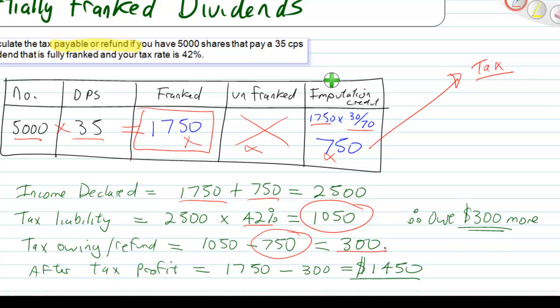So if you want to work out how much after-tax profit you've got, it's going to be your $1,750, take away your $300 there, gives you $1,450. Because you've already had that money there.